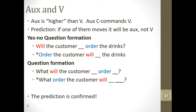In yes/no question formation: 'Will the customer order the drinks?' is grammatical, where the auxiliary moves to the front. But it is ungrammatical to move the main verb across the auxiliary, yielding 'order the customer will the drinks.' We see a similar effect in WH question formation: 'What will the customer order?' — the modal has moved to second position. But 'What order the customer will?' is ungrammatical. So indeed, if one of the verbs must move, it's going to be the highest one — the auxiliary — and our prediction is confirmed.